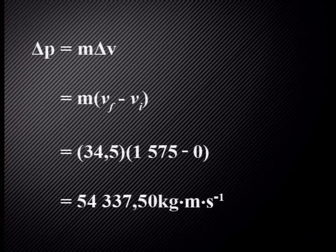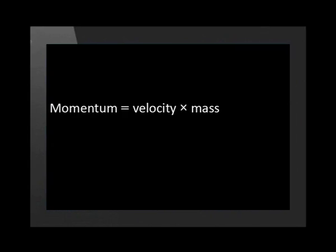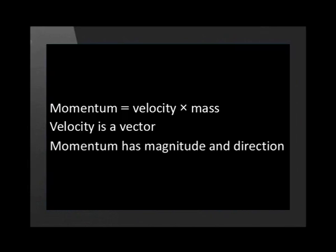This equals positive 54,337.5 kilogram meters per second. It is important to remember that momentum is a vector, since momentum is velocity times mass and velocity is a vector. Therefore, momentum has both magnitude and direction. We need to specify that the momentum of a bullet is in a forward direction.